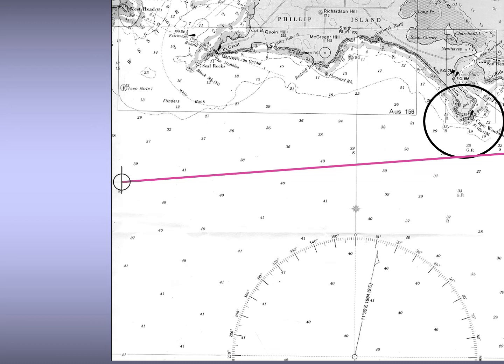The pink line is the course you want to make good — the course the vessel must actually achieve after counteracting for the effect of current. If you simply steer along this pink line, the current may push you off the intended course. To counteract for the effect of current, you find from the tidal stream chart the direction and rate of the current. The rate of the current is its speed.